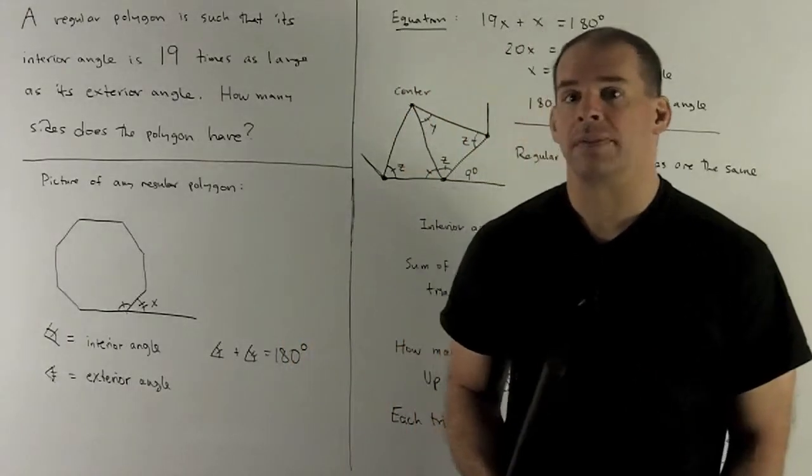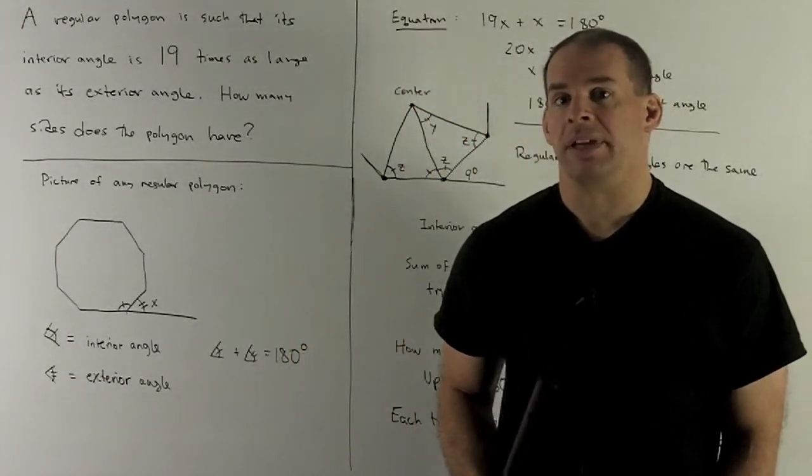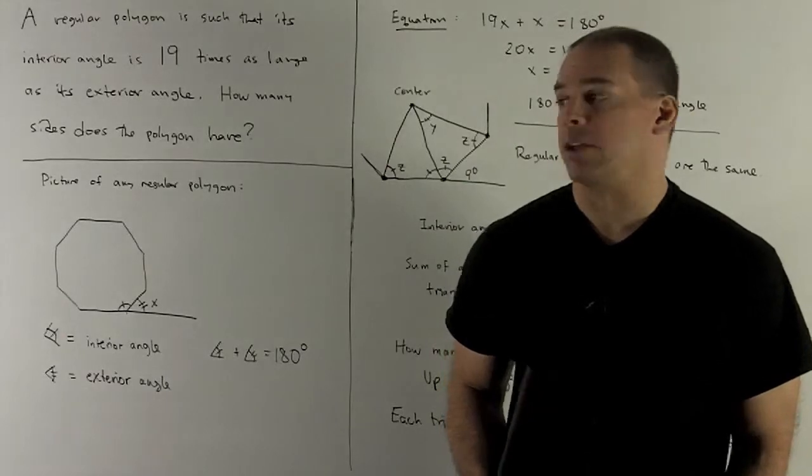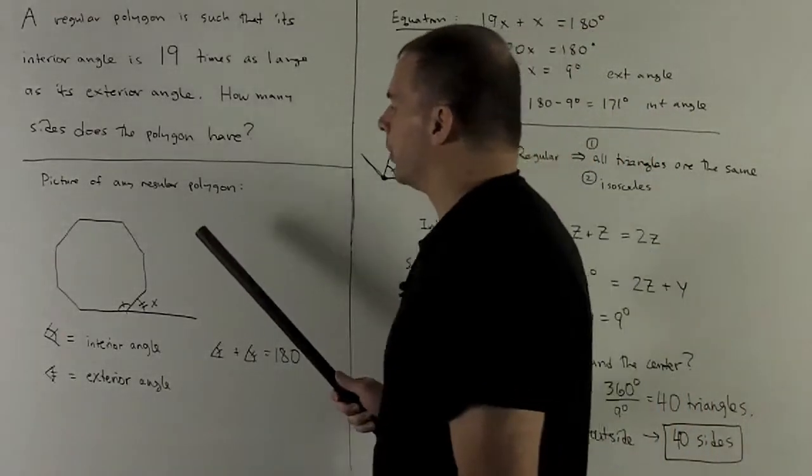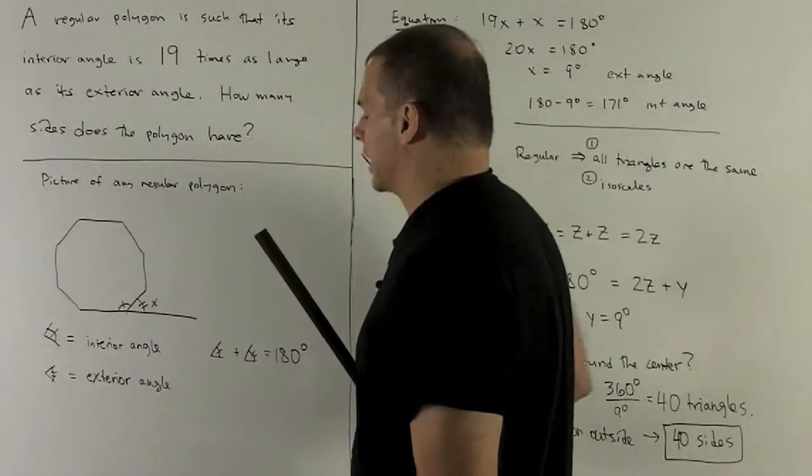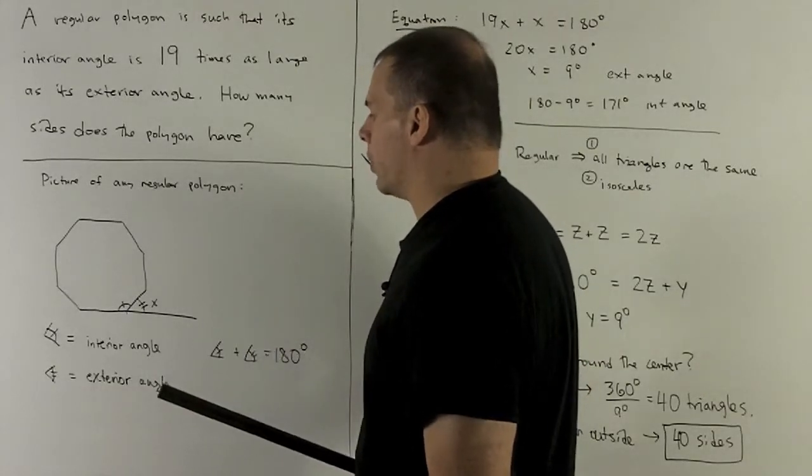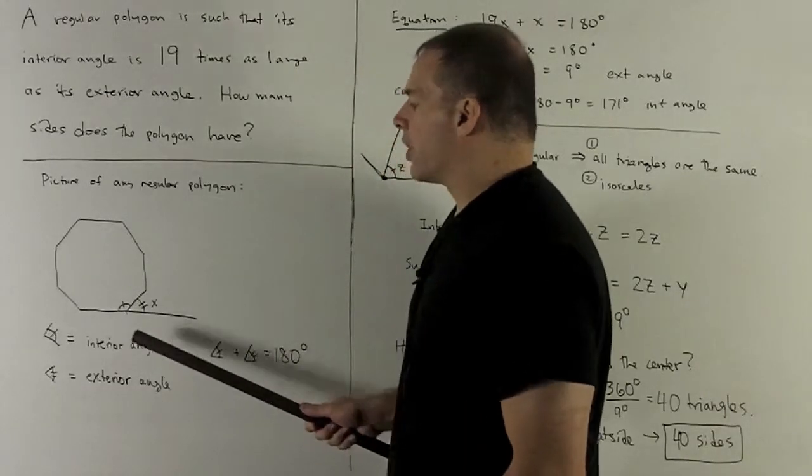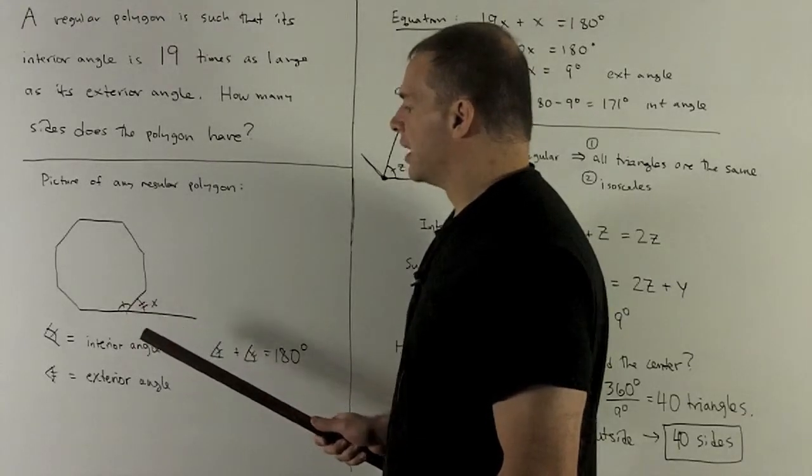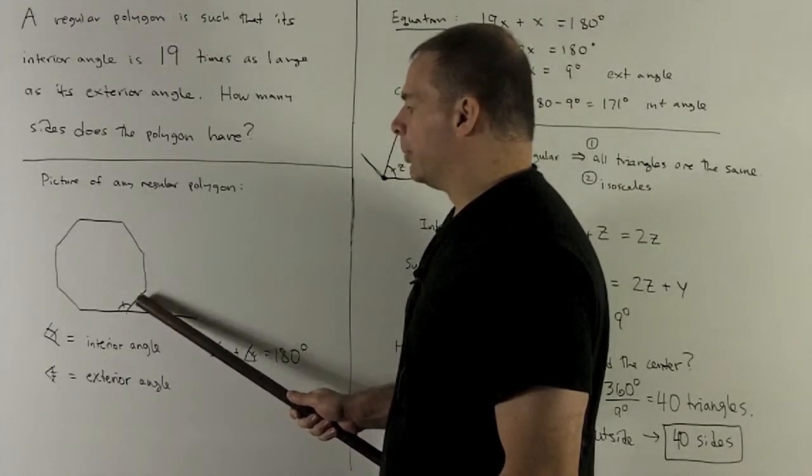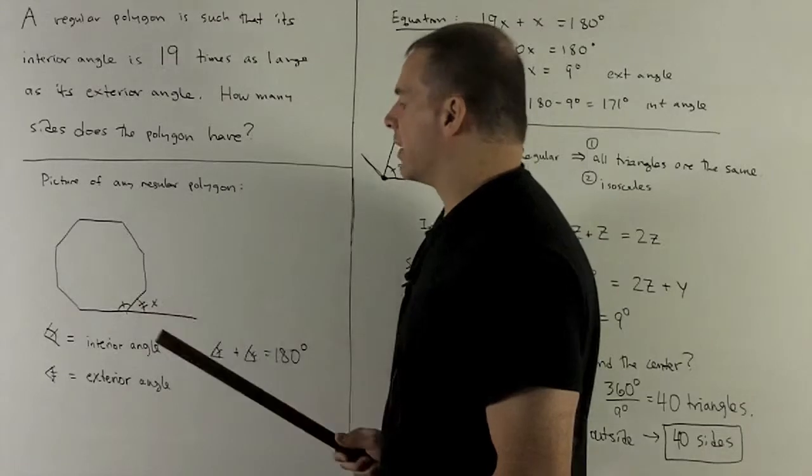To start off, let's sort out this business of interior and exterior angles. I'll use an octagon as a representative of a regular polygon. Let's take a look at what we have. For the interior angle, I'm going to pick a vertex and then this angle will be the angle on the inside of the polygon.